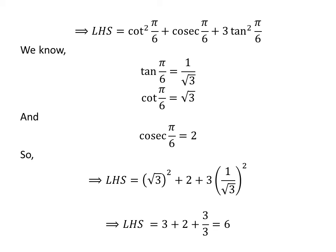Since 3/3 = 1, the left-hand side equals 3 + 2 + 1 = 6. Since 6 is the right-hand side of the given equation, we have proved the given equation.